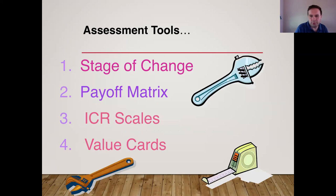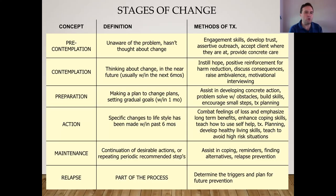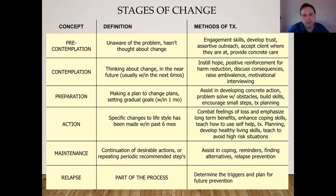The assessment tools: first, understand the theoretical stages of change; second, the payoff matrix; third, the ICR scales to determine readiness; fourth, value cards to identify intrinsic values. The stages of change model shows that everyone follows a pattern: pre-contemplation, contemplation, preparation, action, maintenance, and relapse can occur anywhere. Using weight loss as an example: before thinking about it, the person is in pre-contemplation. Then an event — a doctor's conversation, tight clothes, health complications — brings the behavior into awareness and moves them into contemplation.